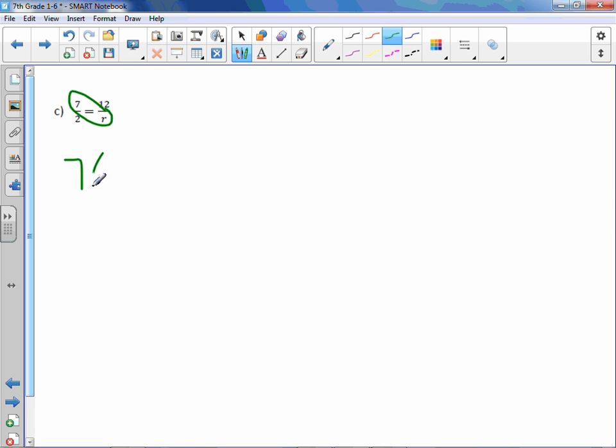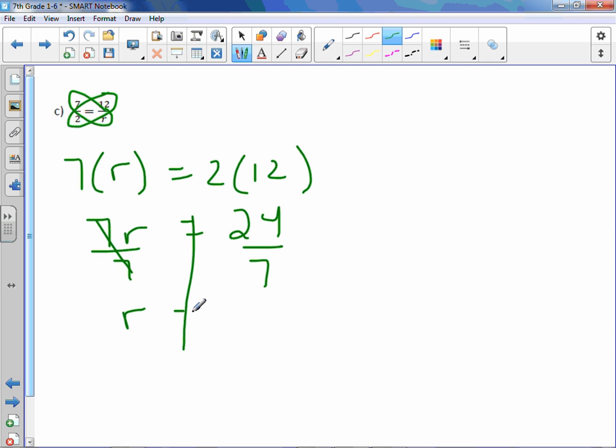7 times r equals 2 times 12. 7r equals 24. Solve the equation. Divide by 7 on both sides. R equals. When you plug this into your calculator, you're going to get a long decimal. We will round to the nearest tenths place. And get approximately 3.4.